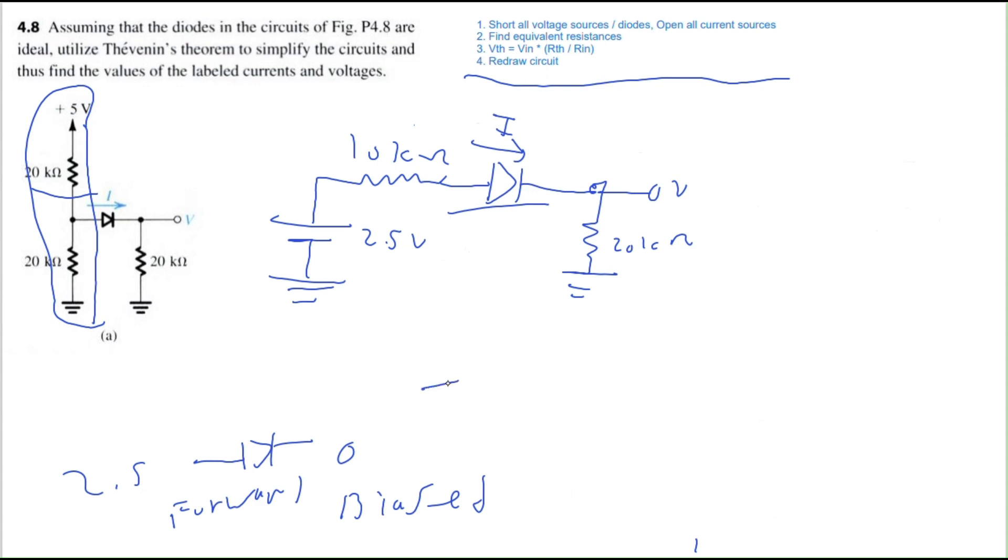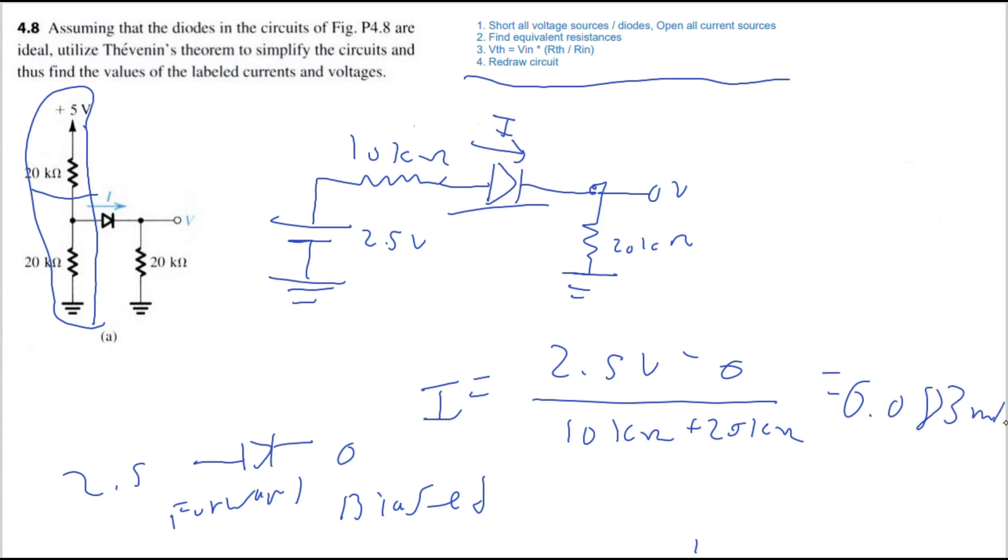Now we can calculate the current. It's going to be I equals 2.5 volts minus 0 volts, this is nodal analysis, divided by that equivalent resistance. So we have a 10 kilo ohm and a 20 kilo ohm resistor in series, so you'll add those up in the denominator. You should get 0.083 milliamps.